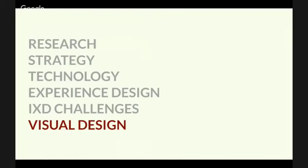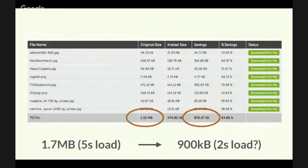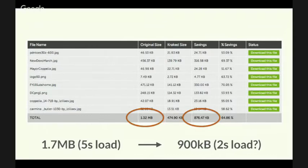On visual design: save-for-web in Photoshop is broken — it's not what you should be using to save images for the web. There are much better third-party tools. I pointed one at the Pennsylvania Ballet website: that one web page had 1.3 megabytes just in images; after running it through a tool called Kraken, which makes non-destructive optimizations, it was nearly half that — a huge saving. Don't trust Photoshop's save-for-web. Most modern web design workflows account for this — if you're using Gulp, Grunt, or Bower it should handle it for you.